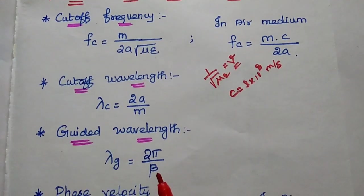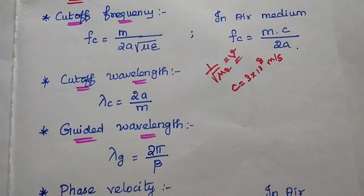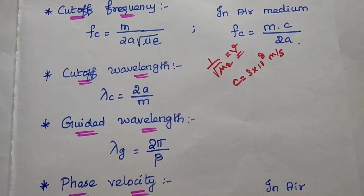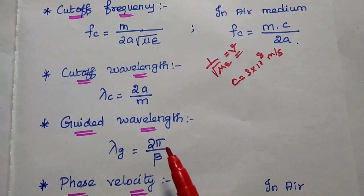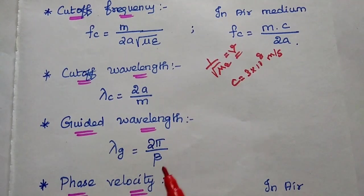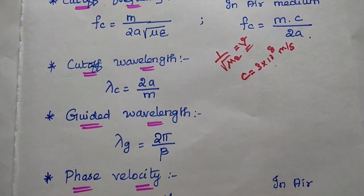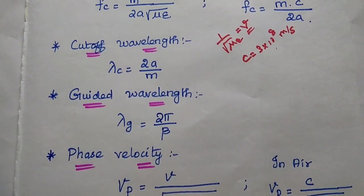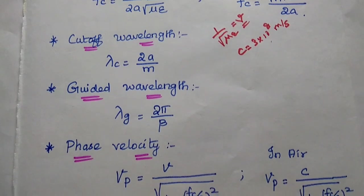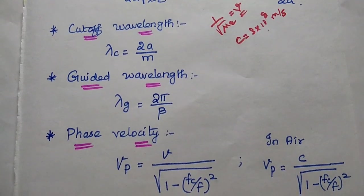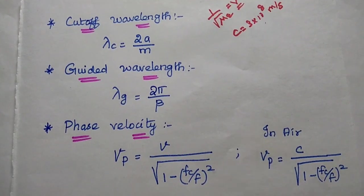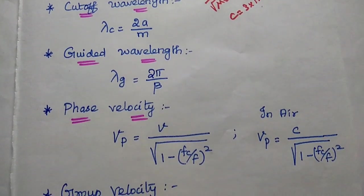The cutoff wavelength lambda c is equal to 2a by m. The guided wavelength lambda g is equal to 2 pi by beta, where beta is the phase shift constant.